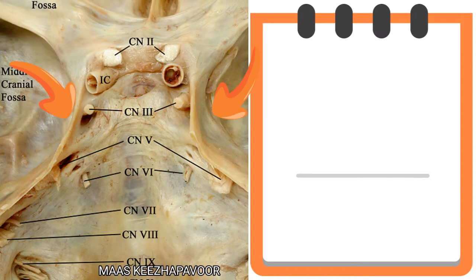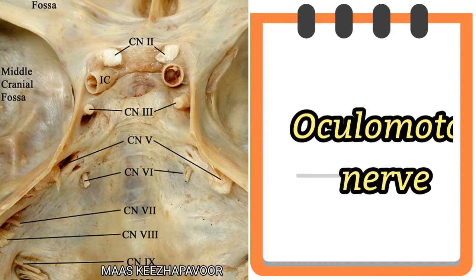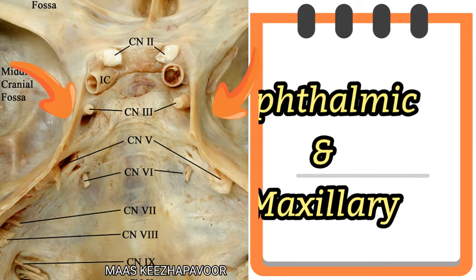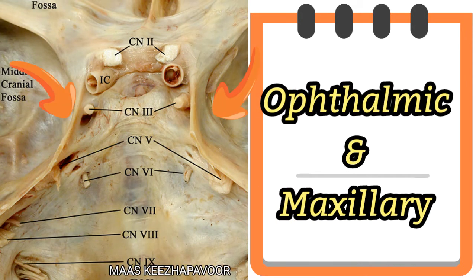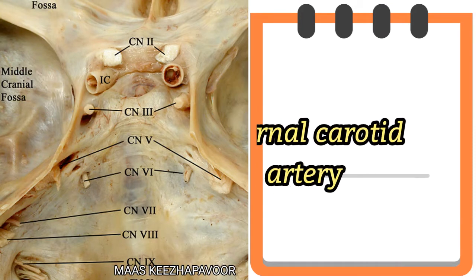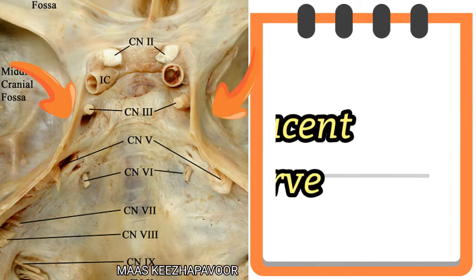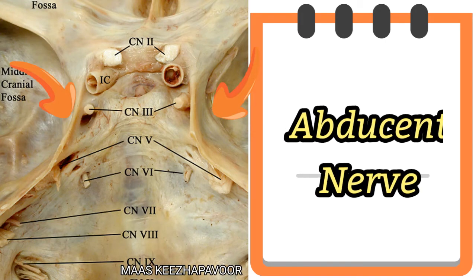In its lateral wall, oculomotor nerve, trochlear nerve, ophthalmic and maxillary divisions of trigeminal nerve are found. In the floor, internal carotid artery and abducent nerve are seen.